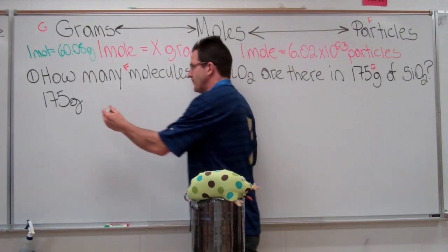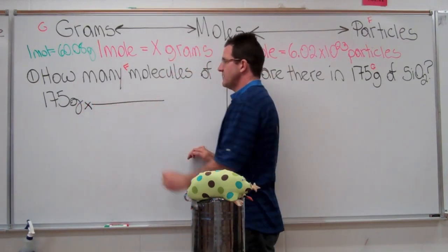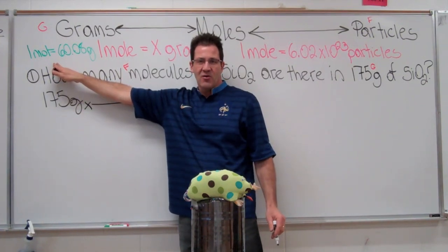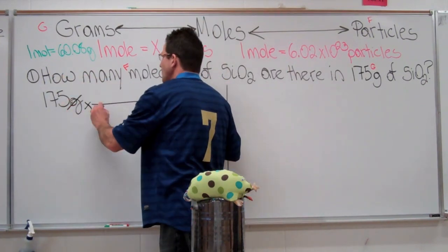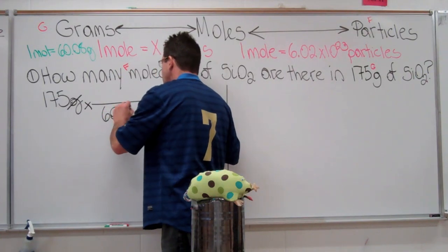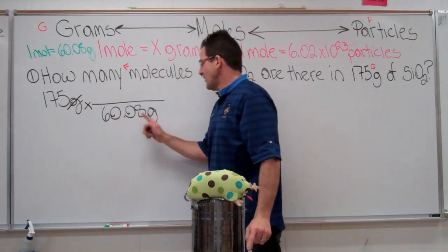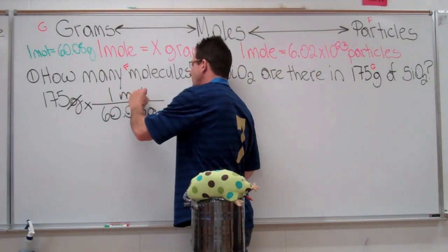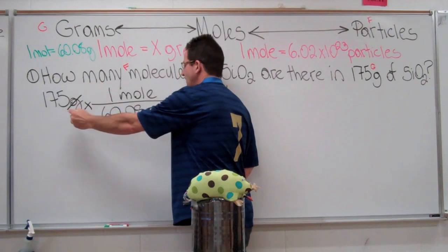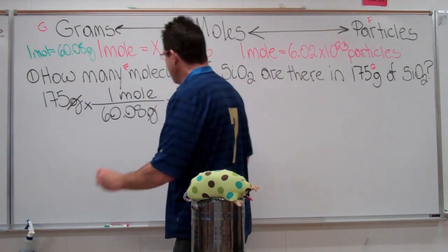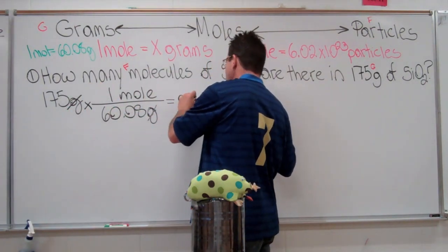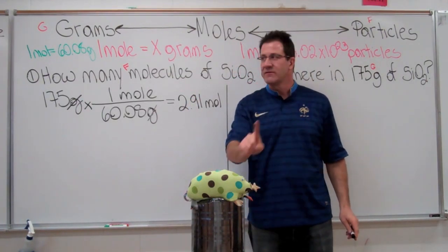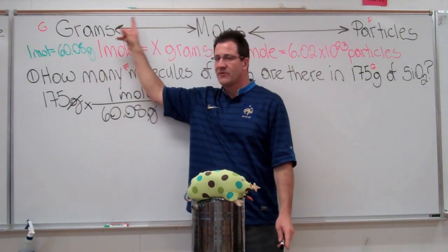We're going to put that conversion factor into our problem with a multiplication/division line. We have grams here, and if we want to cancel grams, we put grams on the bottom of the fraction. One mole goes on the top, so we can cancel the grams. We're left with moles, and we can see that we have 2.91 moles of silicon dioxide. That is step one — going from grams to moles.